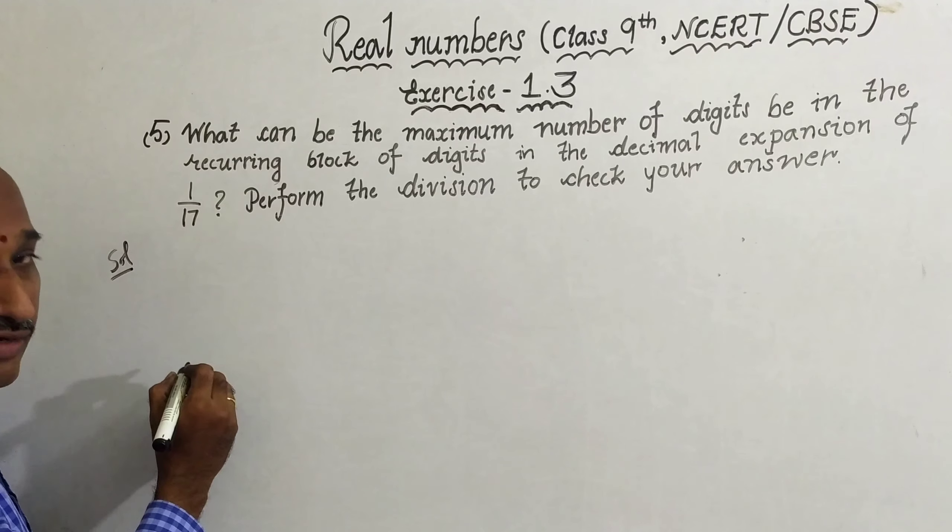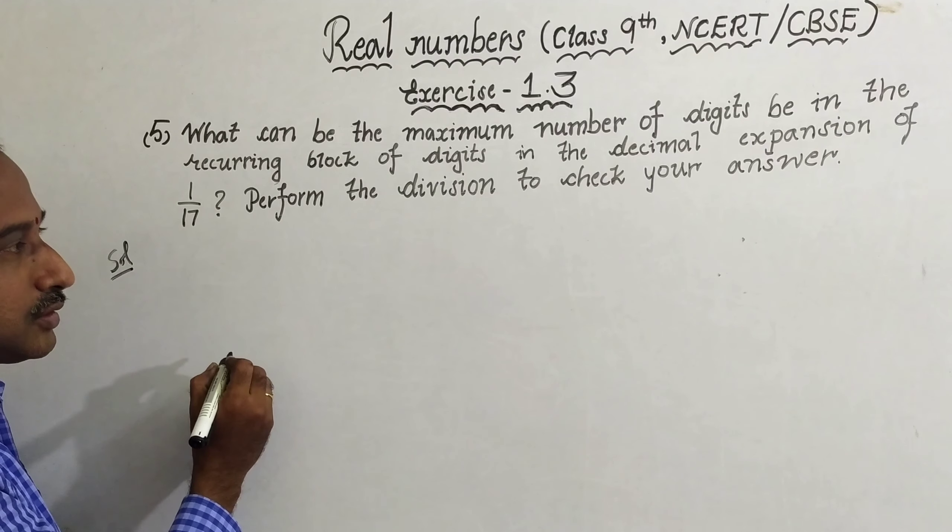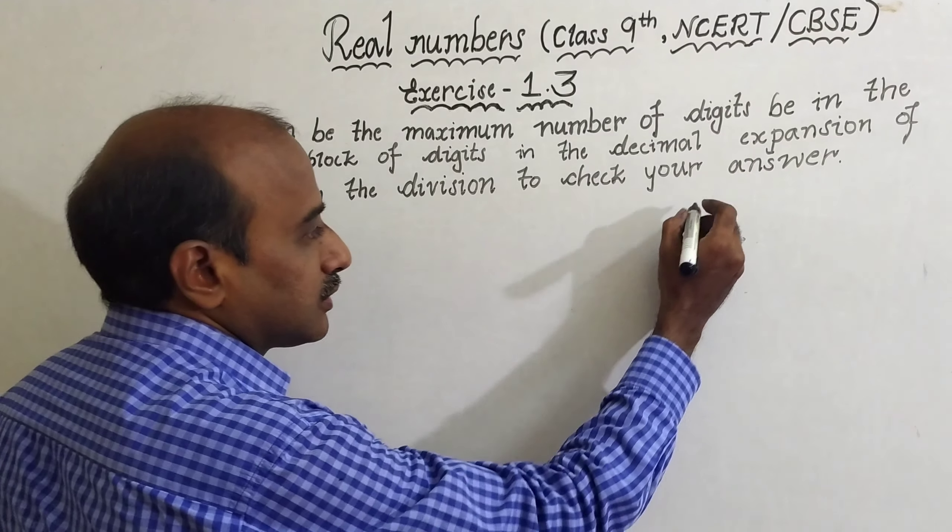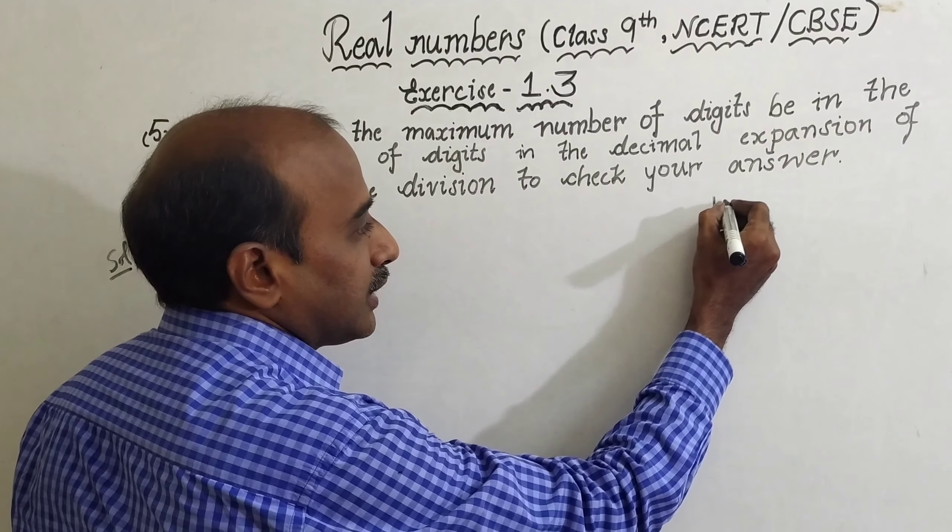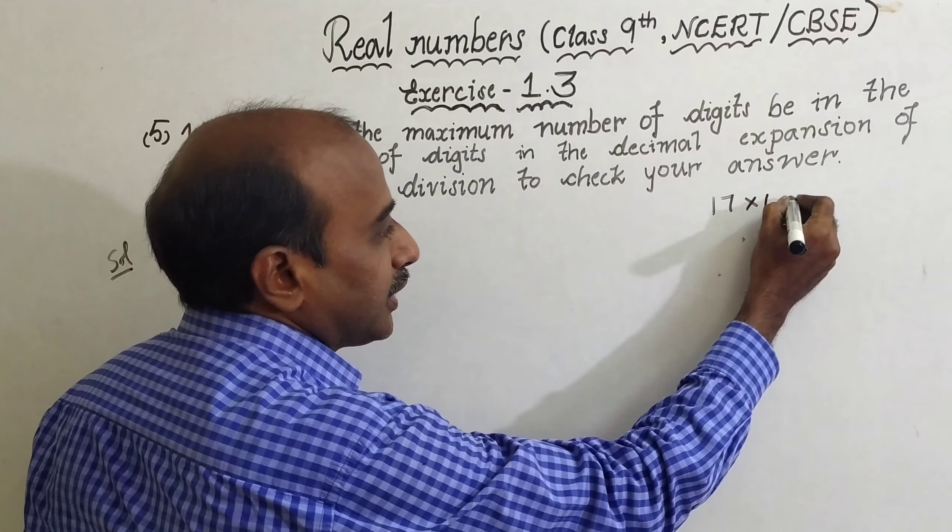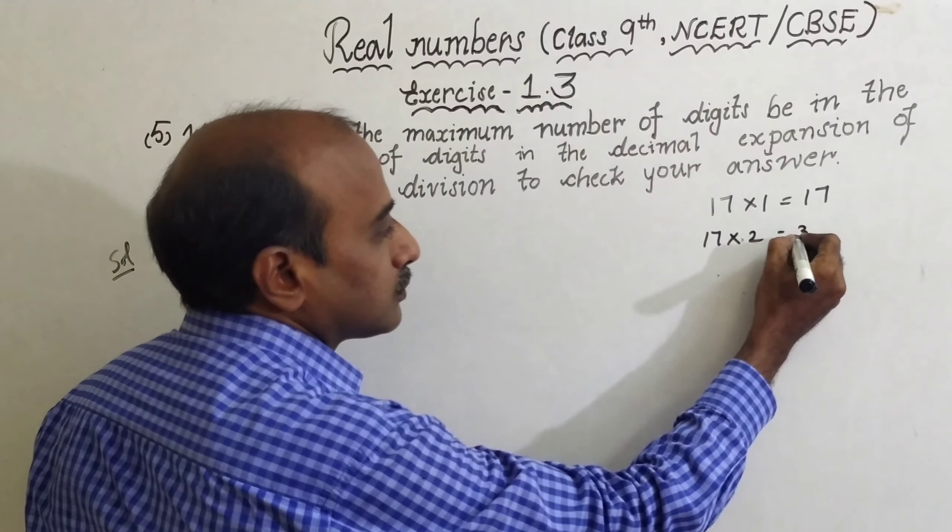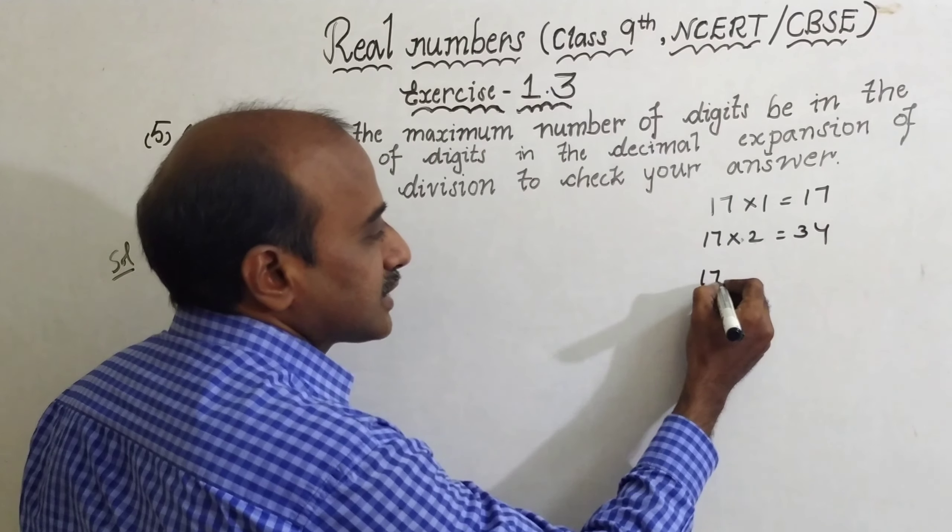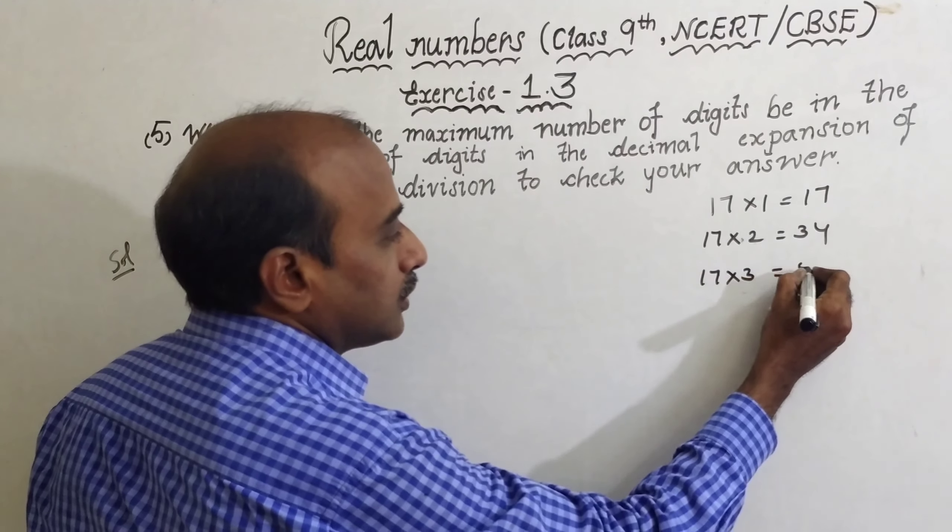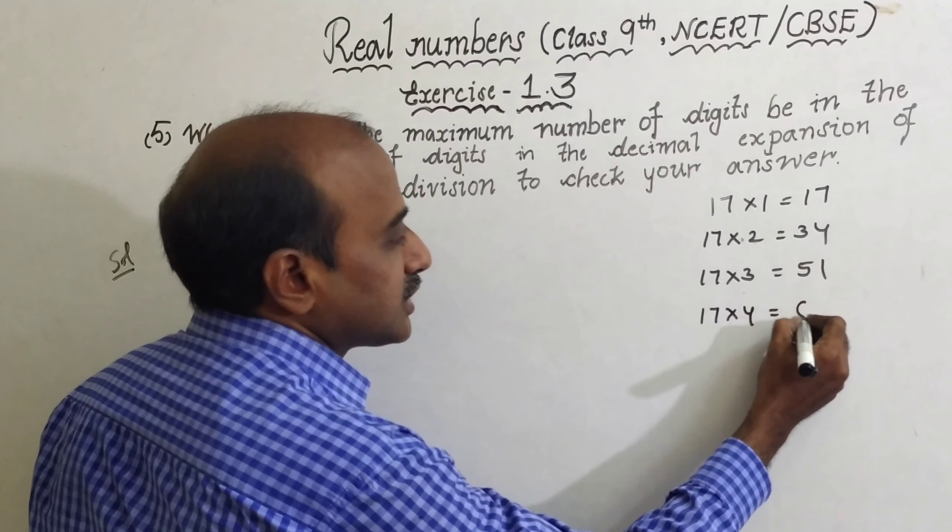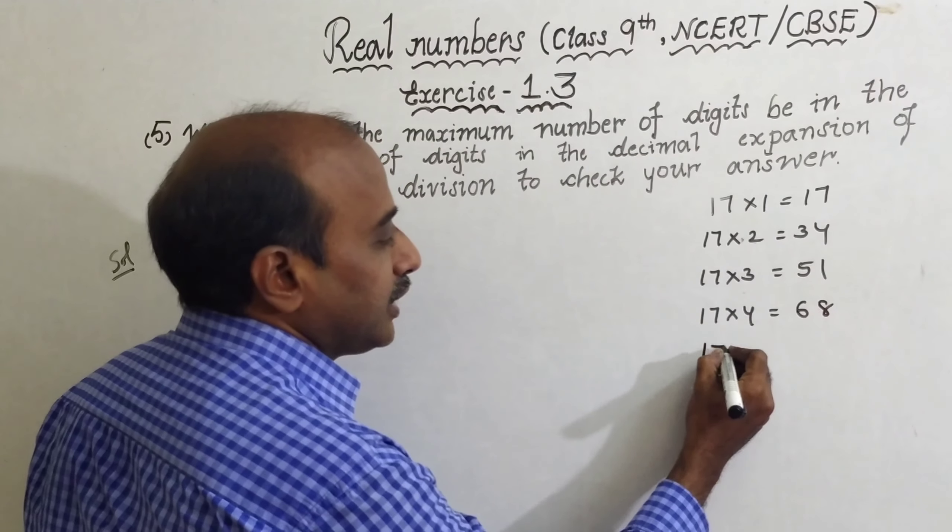For that we should know the 17 table first. We can see the 17th table: 17 times 1 is 17, 17 times 2 is 34, 17 times 3 is 51, 17 times 4 is 68.